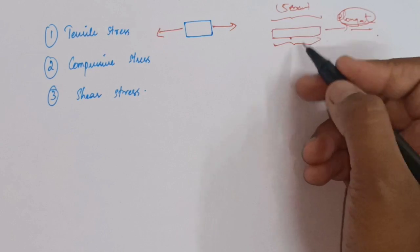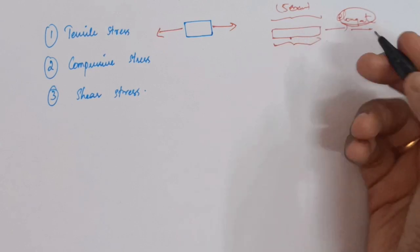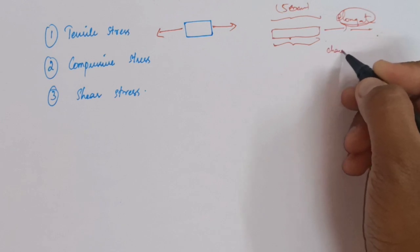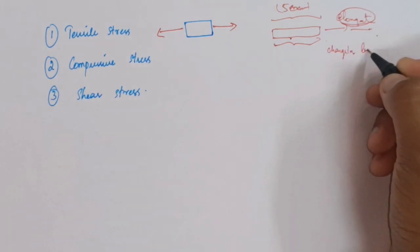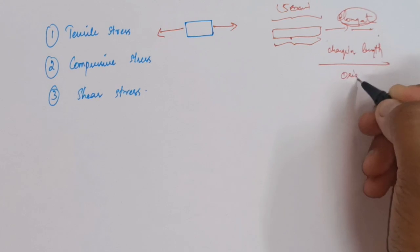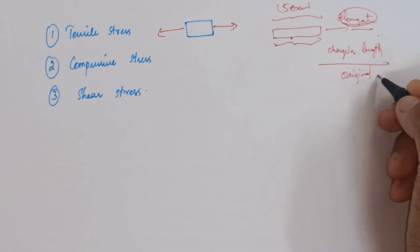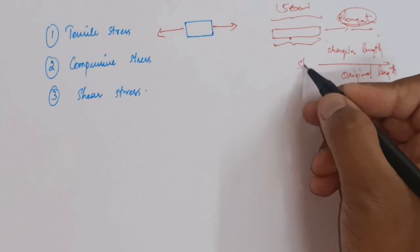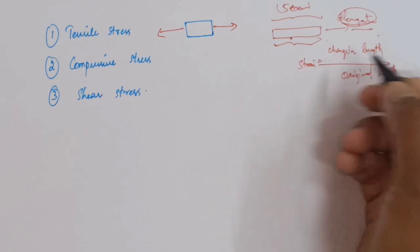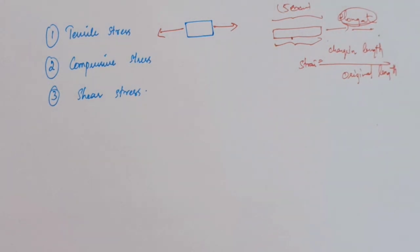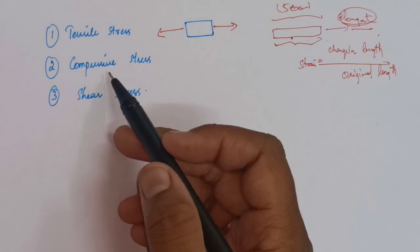This change in shape is your strain. Strain is identified as the deformation or change in length divided by the original length. You identify stress by force divided by area, and strain by change in length divided by original length.